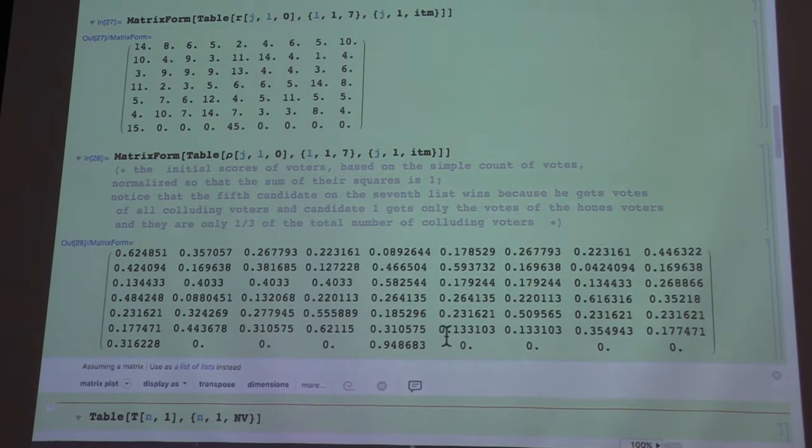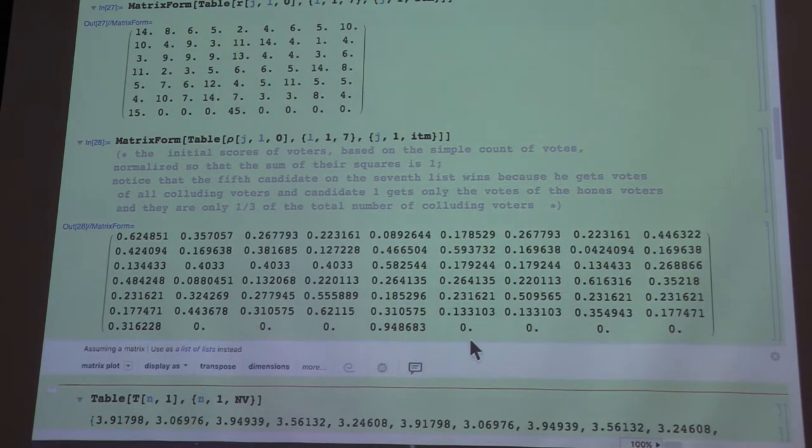This would be what you would get if you just counted the votes. So obviously, malicious voters would be able to dispute the election, and instead of candidate 1, candidate 5 would be elected.